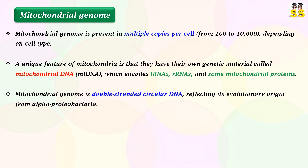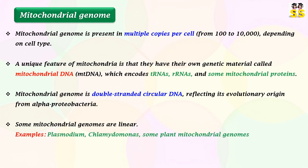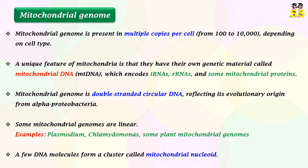The mitochondrial genome is double-stranded circular DNA, reflecting its evolutionary origin from alpha-proteobacteria. Some mitochondrial genomes are linear, as seen in Plasmodium, Chlamydomonas, and some plant mitochondrial genomes.